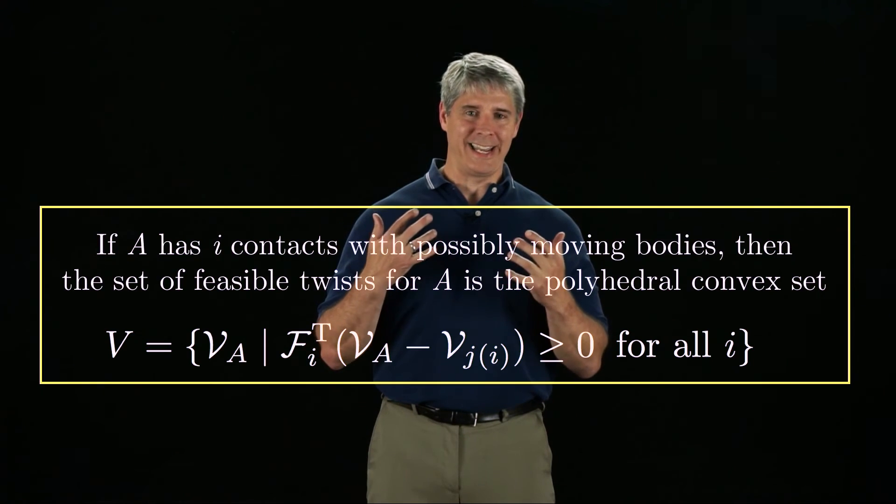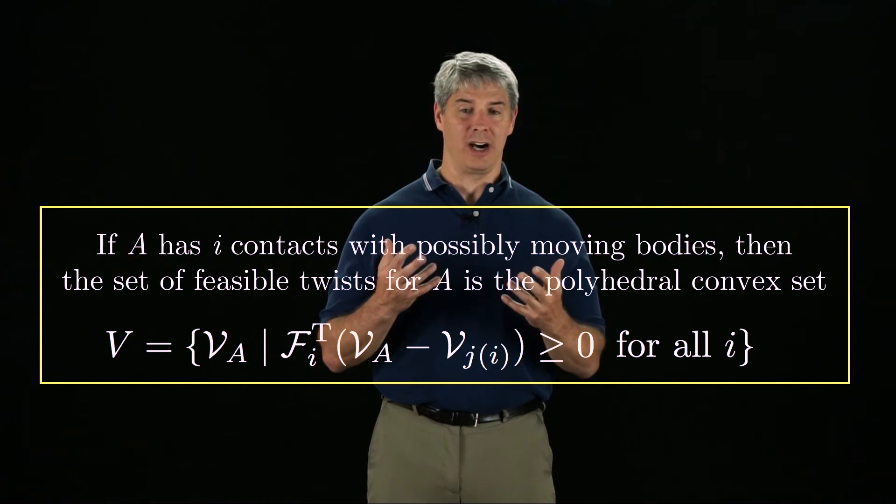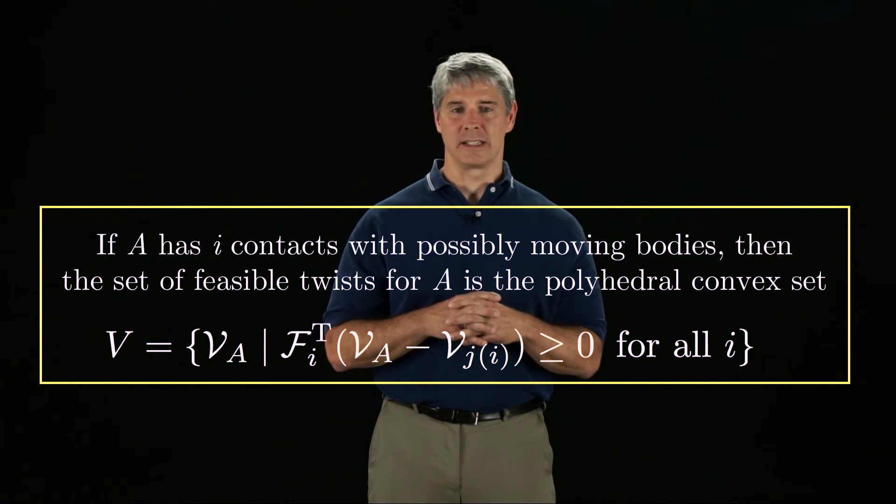In summary, if the body A is in contact with moving bodies, the set of feasible twists is the polyhedral convex set, satisfying each of the half-space constraints.